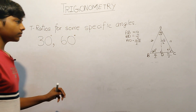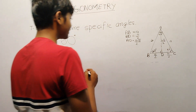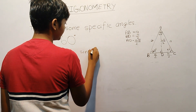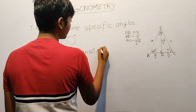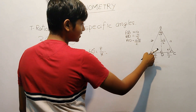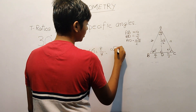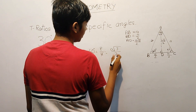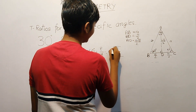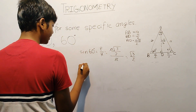Now we will calculate all the trigonometric ratios. Let's start with 60 degrees. Sin 60 degree: sin is perpendicular by hypotenuse. The perpendicular here is AD, which is A root 3 upon 2, divided by hypotenuse A. A and A cancel, giving us root 3 by 2. Then cos 60 degree is base by hypotenuse: A by 2 divided by A. A and A cancel, giving us 1 by 2.